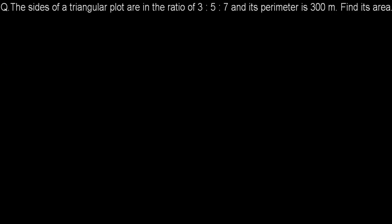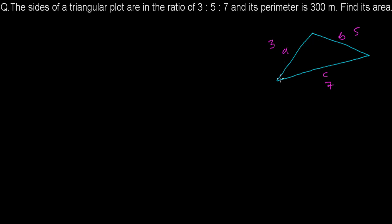We have a triangular plot. Let's say this is side a, this is side b, and this is side c. All three sides are in the ratio 3:5:7. We don't know the exact measurement, but we can represent them as 3x meters, 5x meters, and 7x meters.